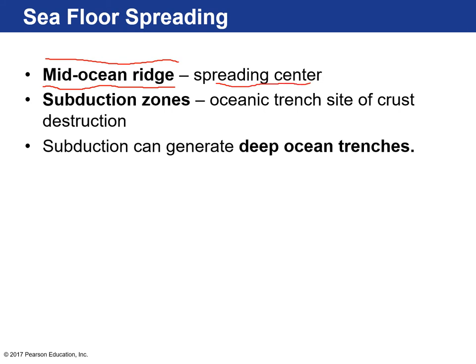In other areas where you have two tectonic plates colliding, we refer to those as subduction zones — sites where there's actual tectonic crust destruction. In these zones, we also find the deepest parts of the oceans. The Marianas Trench is an ocean trench resulting from subduction and two plates colliding.